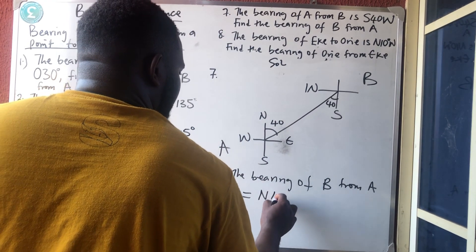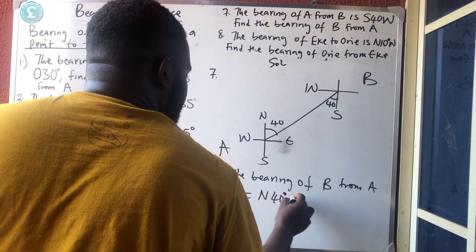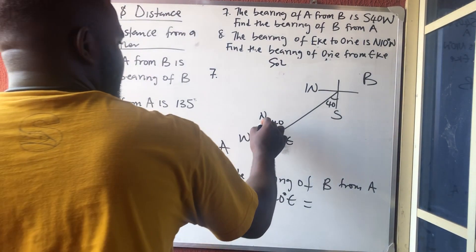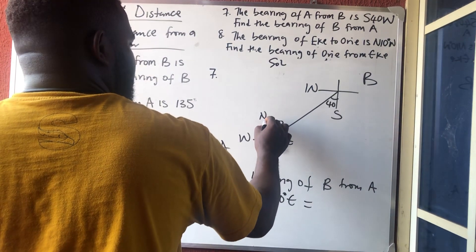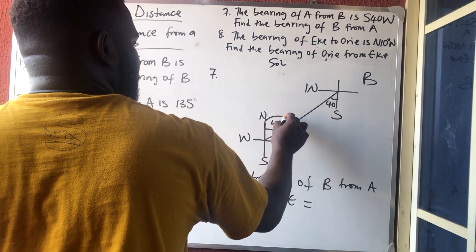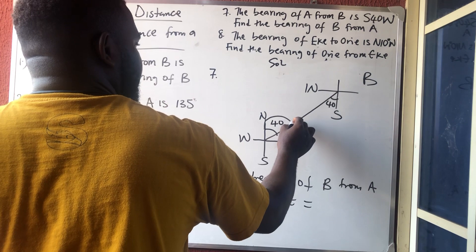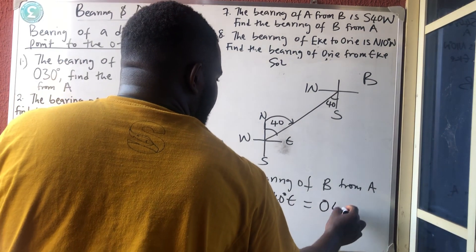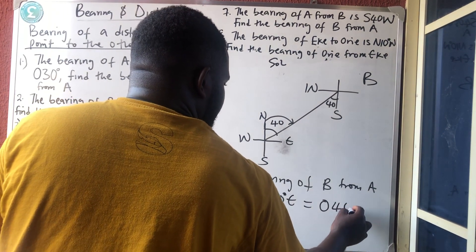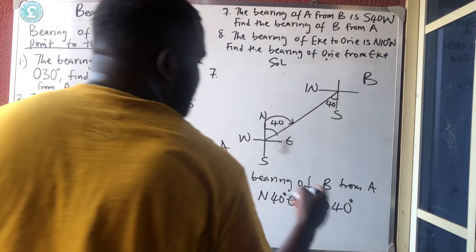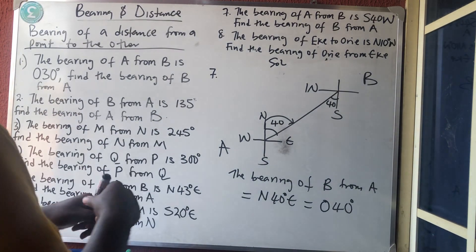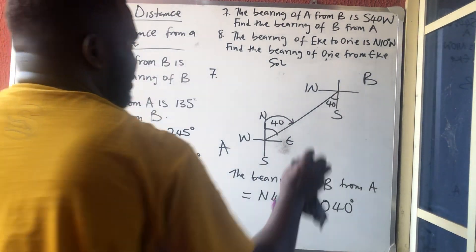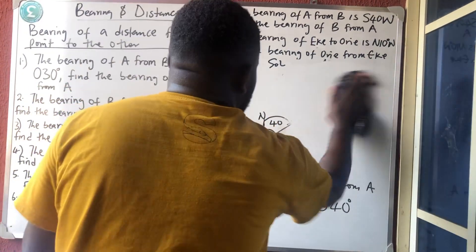North, 40 degrees east. Or how do you represent it in degrees? You start from the north until you touch the line — only 40 is covered. So it's 040 — because you must put it in three digits. These things are very simple.